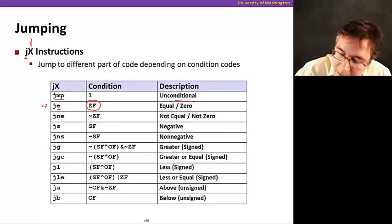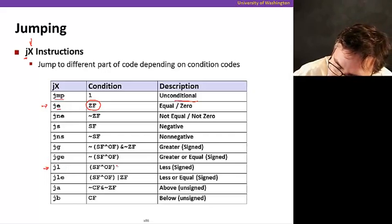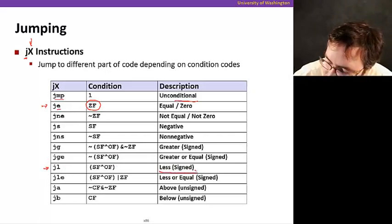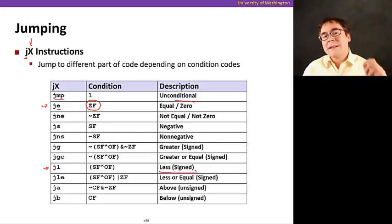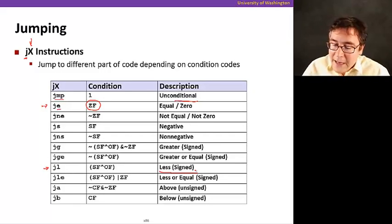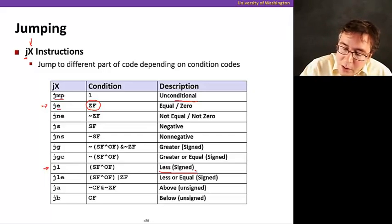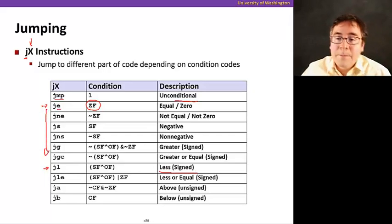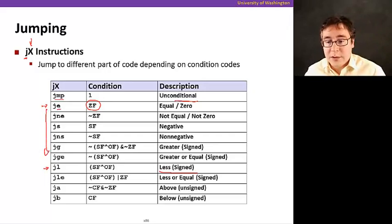Let me pick another example here. If you use jl, it's going to be jump if less than. So if you do a comparison and it turns out that it's less than, the jump's going to happen. We're going to show examples of that later, and I encourage you to read in the book about how all of these instructions work.